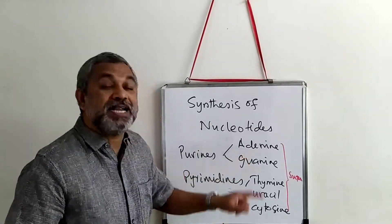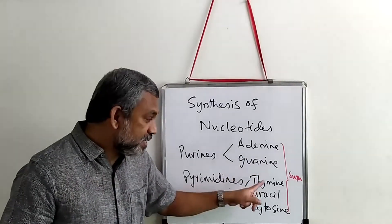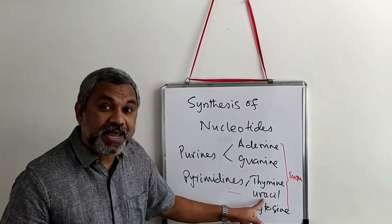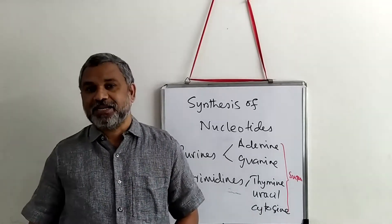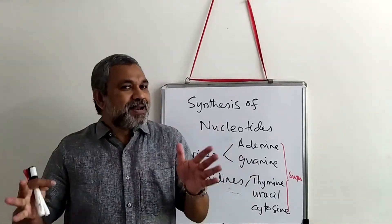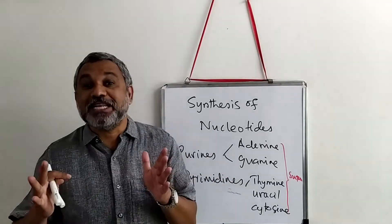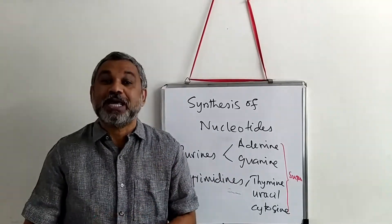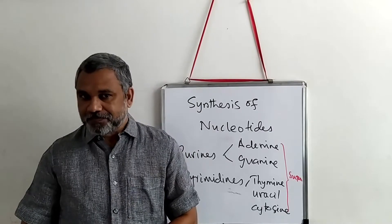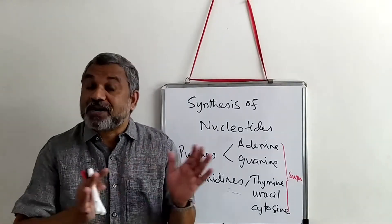When you attach a phosphate group to the ribose sugar, you get a nucleotide. The nucleotides are called adenylate, guanylate, thymidylate, uridylate, and cytidylate. These are the fundamental naming conventions for nucleotides.